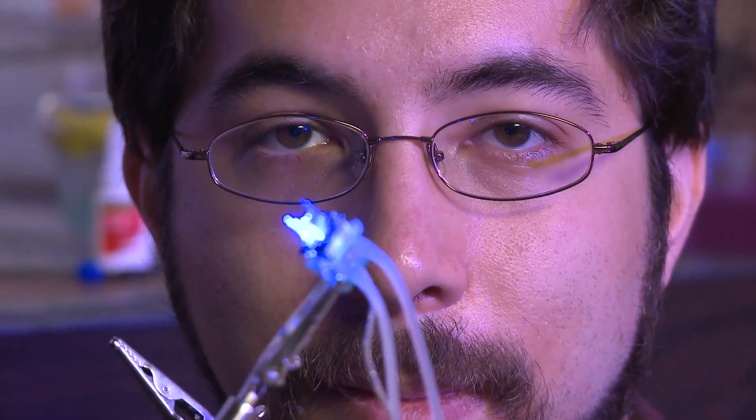Over the last few years, we've developed a technology tool set called optogenetics, which is basically a set of molecules that you can put into neurons that allow you to turn on or off the electrical activity of those neurons using pulses of light.